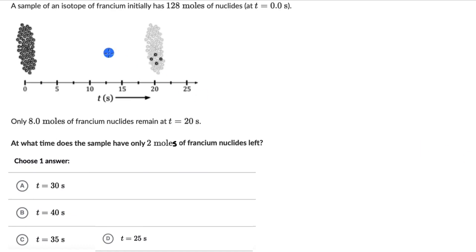Let's solve a question on half life. Here we have a sample of an isotope of francium. Initially it has 128 moles of nucleides at 0 seconds. Only 8 moles of francium nucleides remain at 20 seconds. At what time does the sample have only 2 moles of francium nucleides left? And we have to choose one answer out of these 4 options.